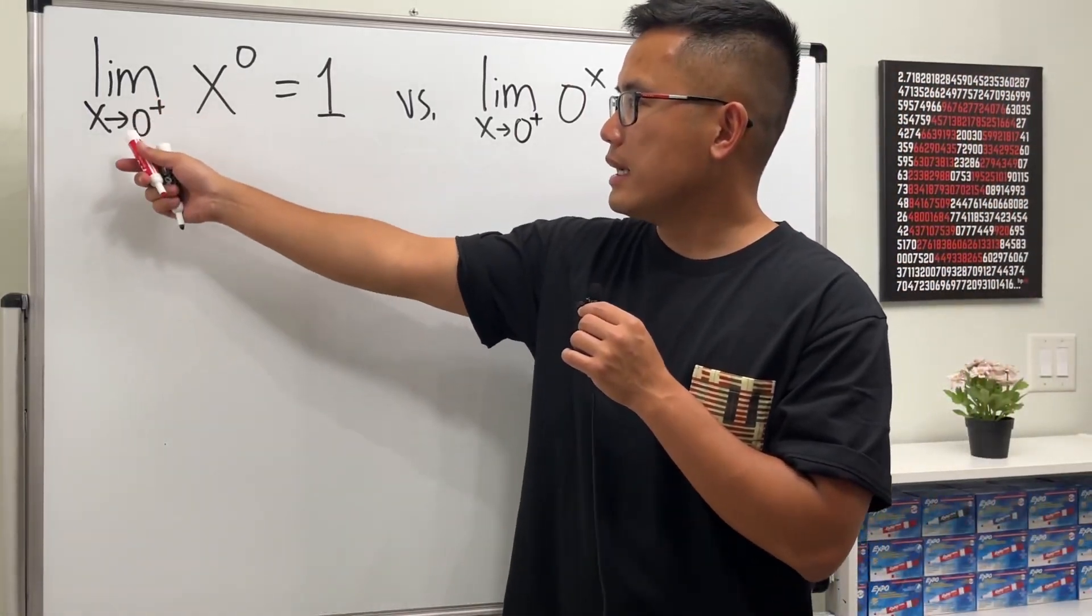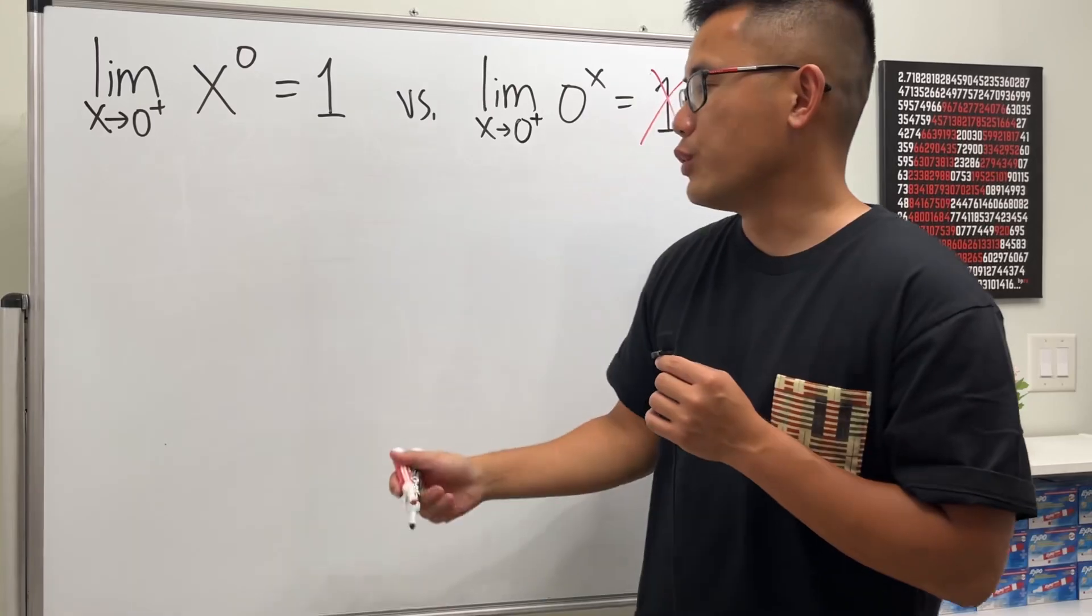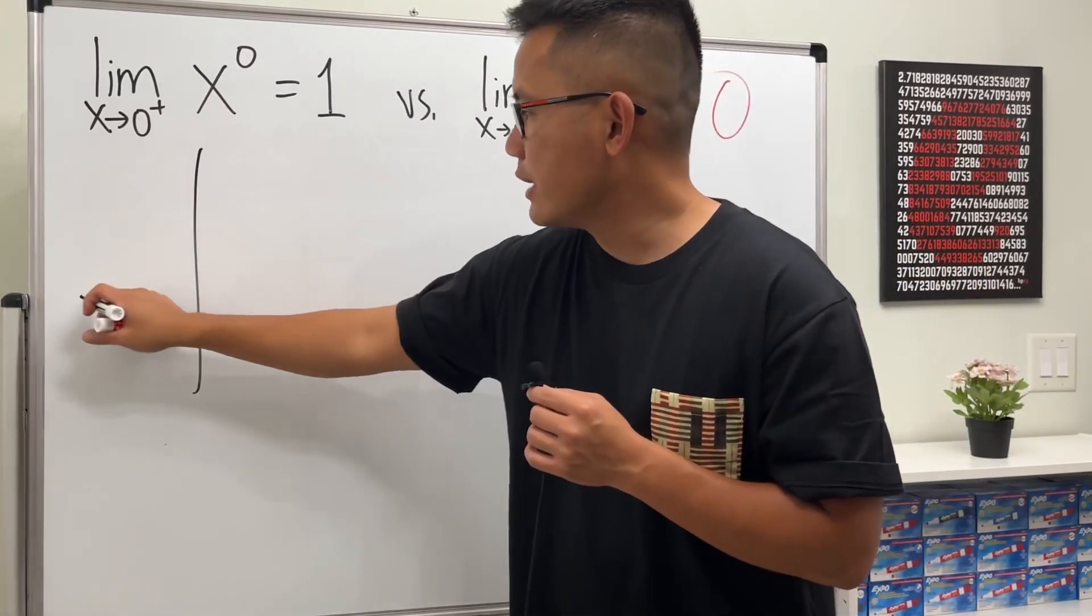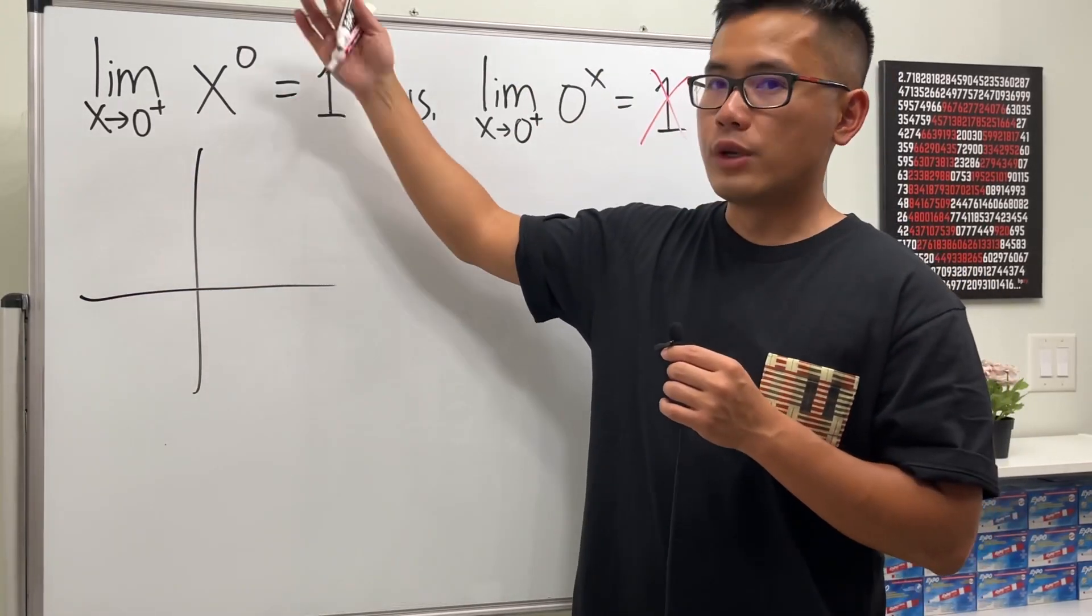Now let's talk about why the limit as x approaching zero plus of x to the zero. This right here is equal to one. The reason is that if you look at the graph, when we have a number to the zero power, we'll just get one.